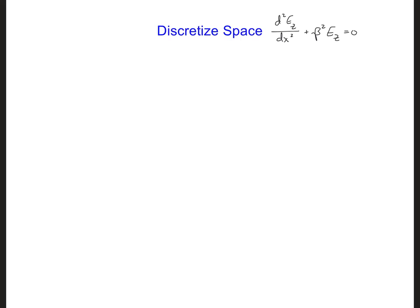Since it's too computationally demanding to enforce having this quantity on the left equal to zero everywhere in space, what we can do instead is have this quantity on the left equal to zero in what's called a weighted sense across each element of the grid.